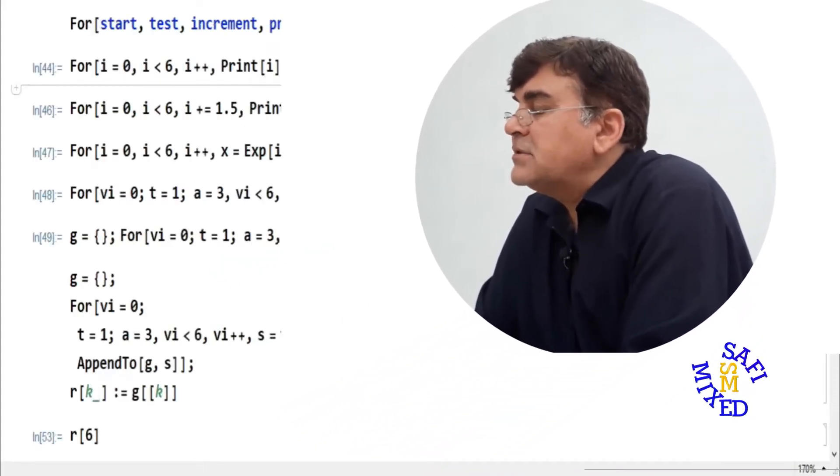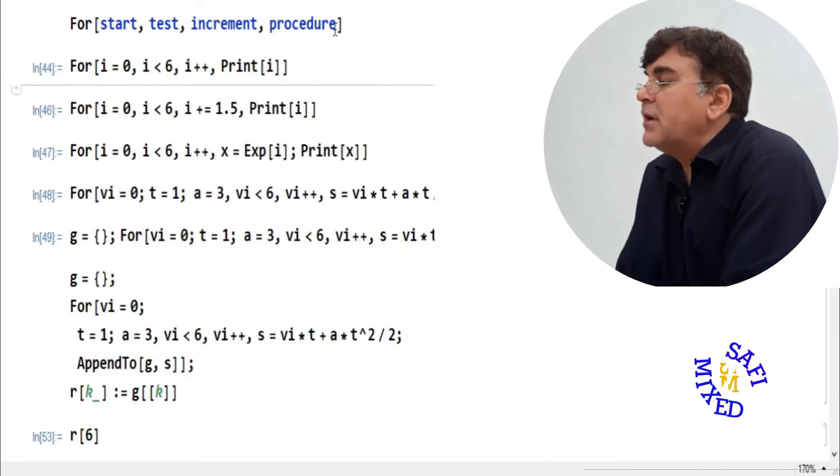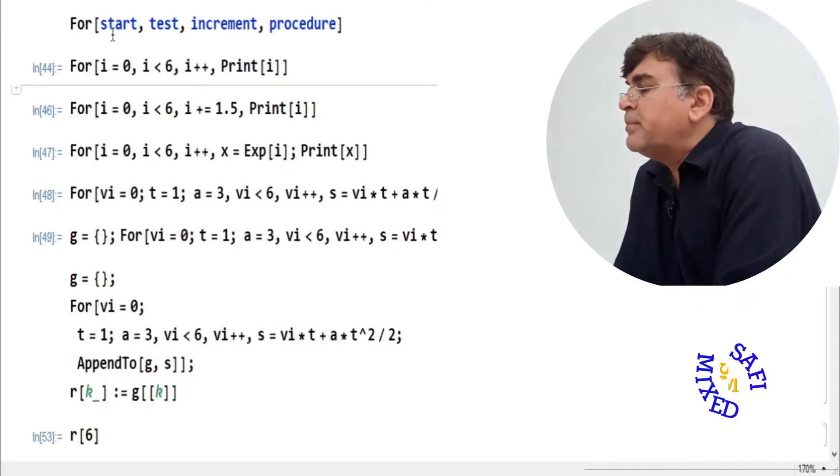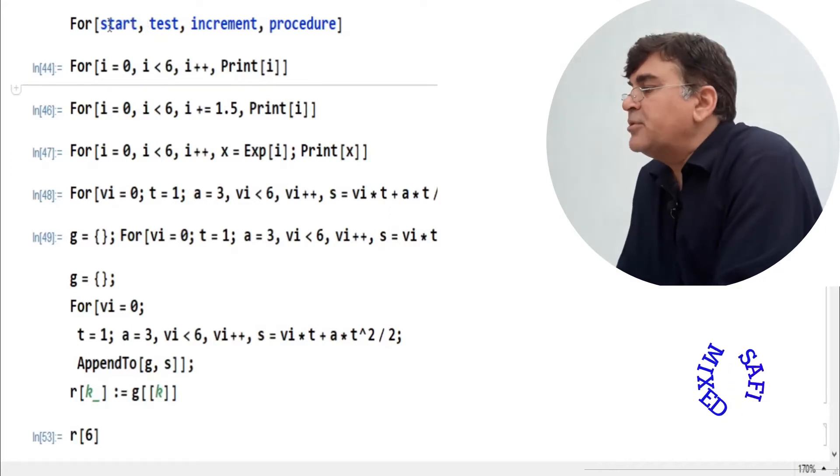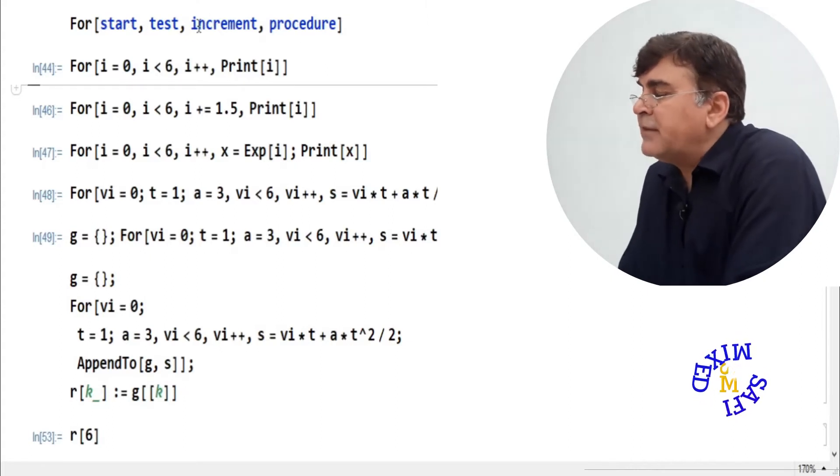Let's first move to understand the different parts of the for loop. The for loop works as a function and therefore takes an argument where the argument consists of four parts separated by a comma. For the sake of understanding, I have mentioned the parts as start, test, increment, and procedure.